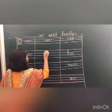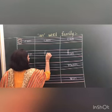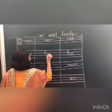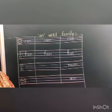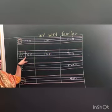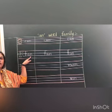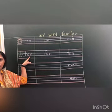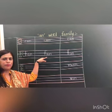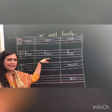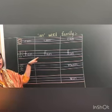F says /f/, A says /a/, N says /n/ — F-A-N, fan. F says /f/, A says /a/, N says /n/ — F-A-N, fan. Let's read it. F says /f/, A says /a/, N says /n/ — F-A-N, fan. F-A-N, fan.